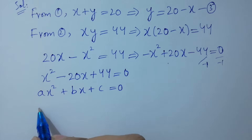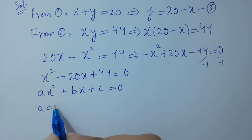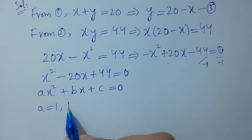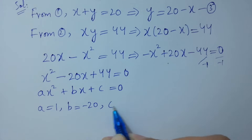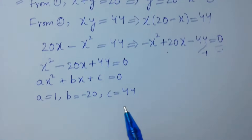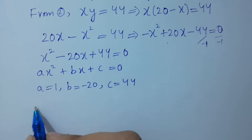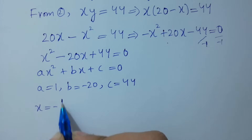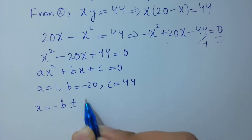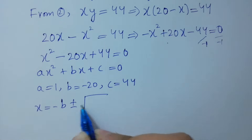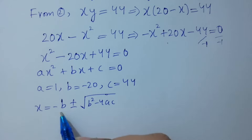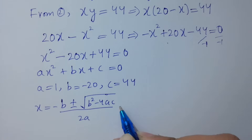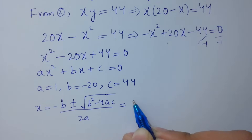Comparing, we have a equal to 1, b equal to minus 20, c equal to 44. Apply the quadratic formula: x equal to minus b plus or minus square root of b squared minus 4ac, over 2a. Put the values here.